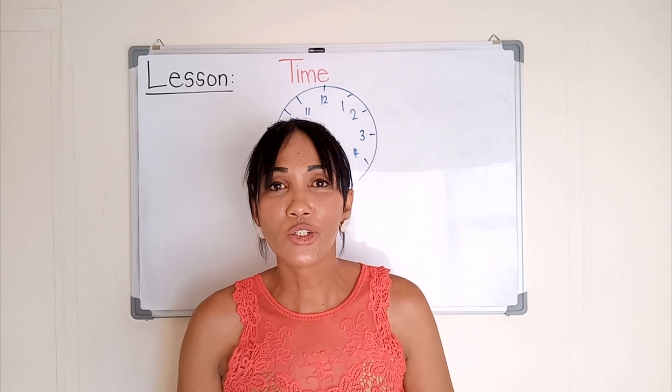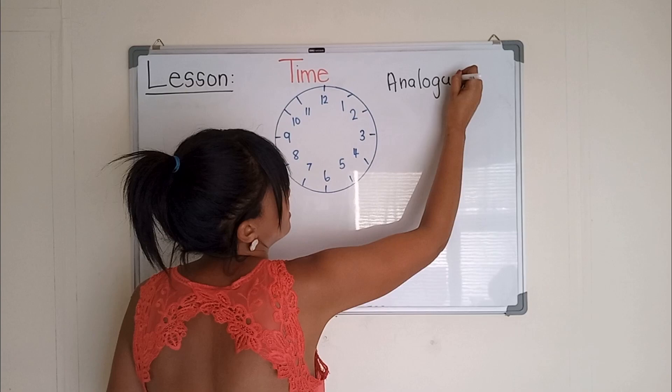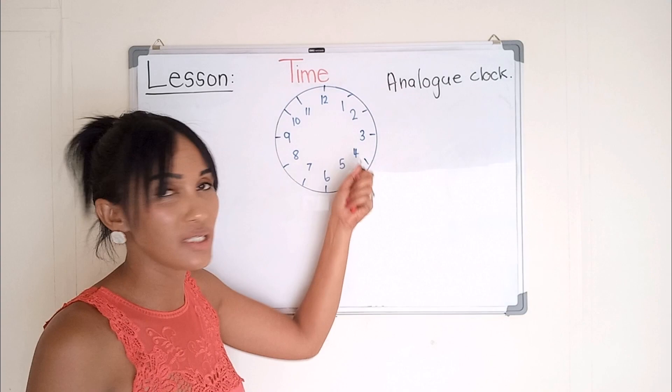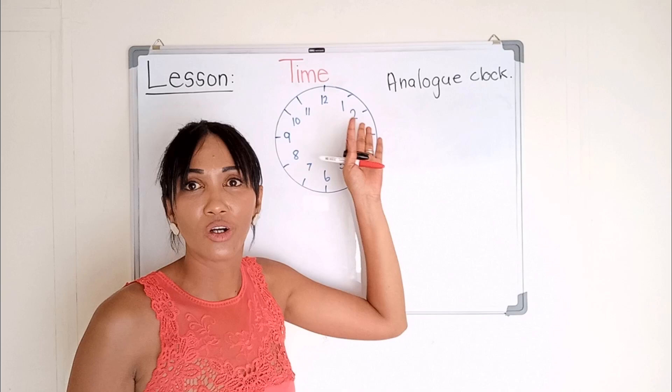Good day and welcome everybody to TNH Learning. Today's lesson will be time. On the board we have the analog clock. This is the analog clock. As you can see, the analog clock is up to 12 hours. So if we identify what is the hour in the day, we use the analog clock.